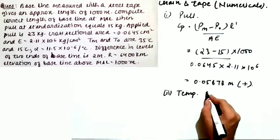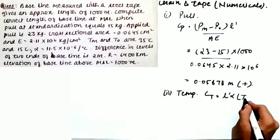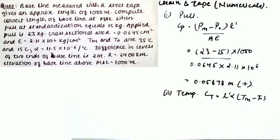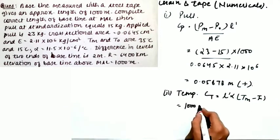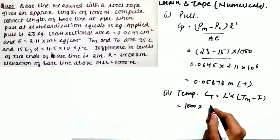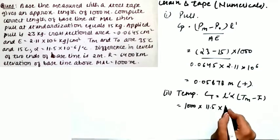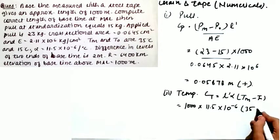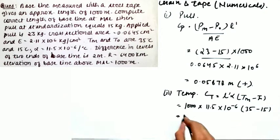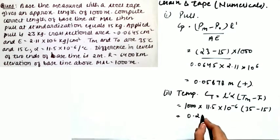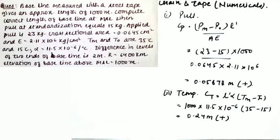The temperature correction formula is L' × α × (TM − T₀). L' = 1000, α = 11.5 × 10⁻⁶, TM − T₀ = 35 − 15 = 20. Since TM is greater than T₀, this correction is positive. It works out to 0.23 meters, and it is positive.